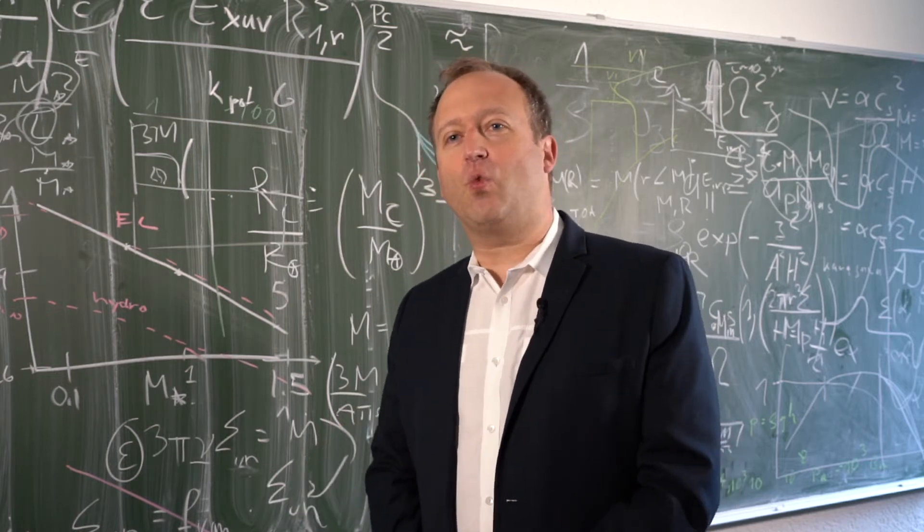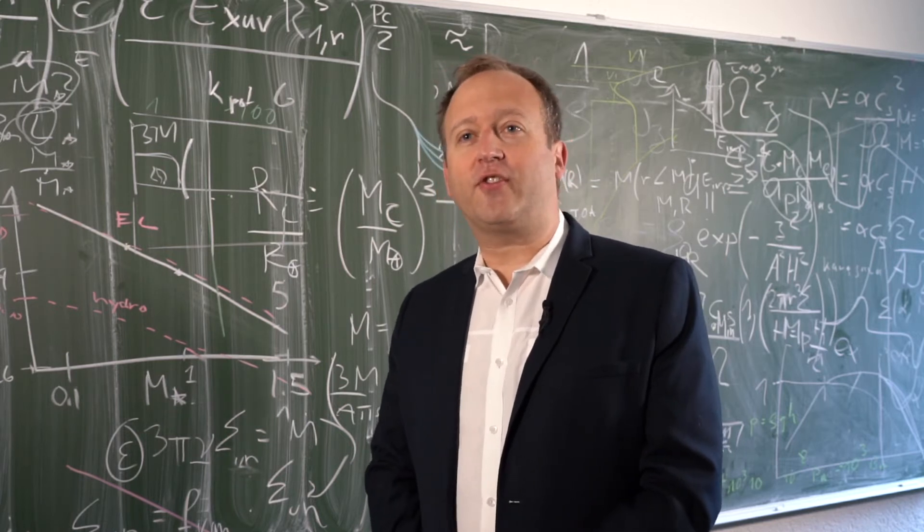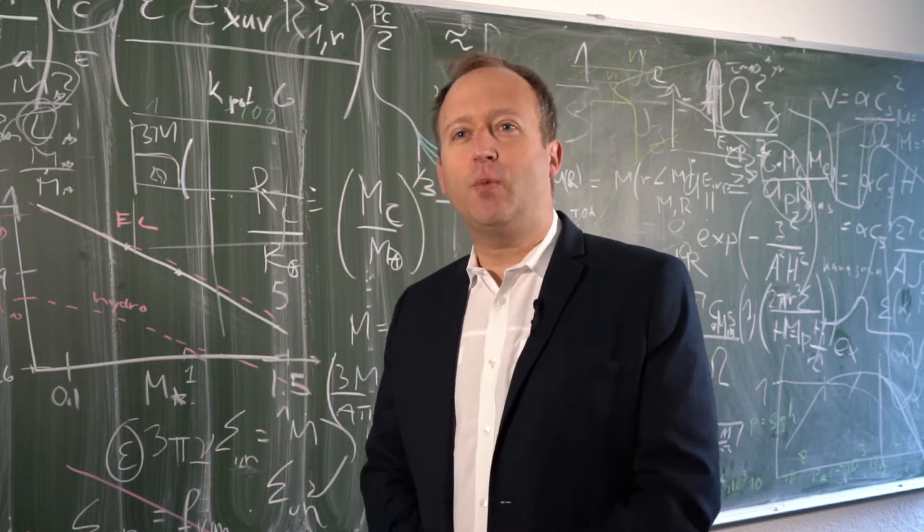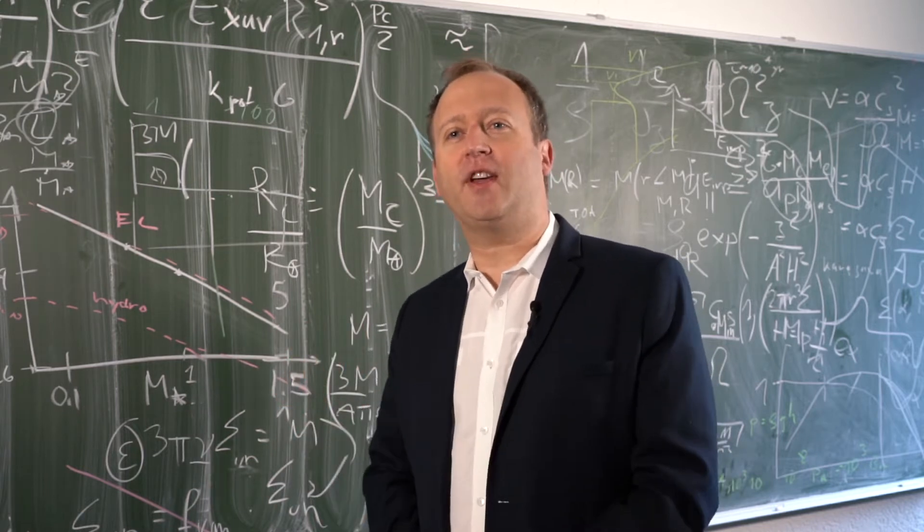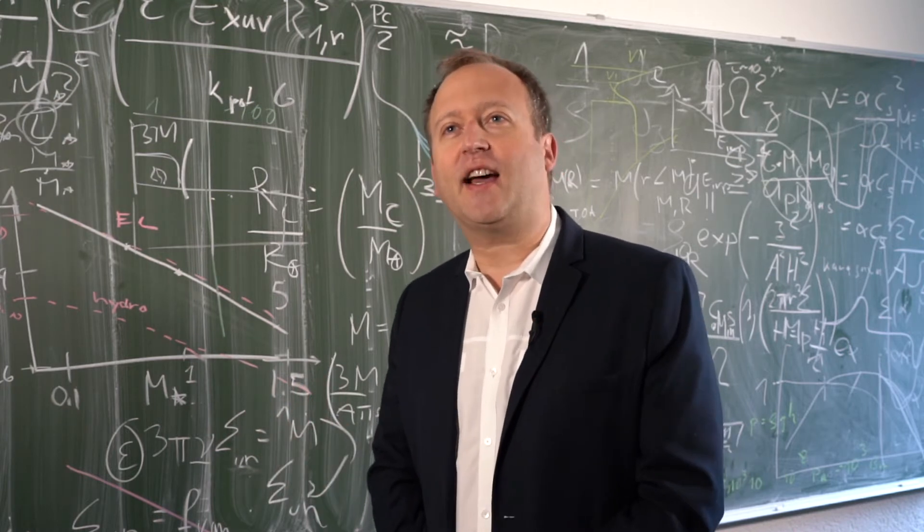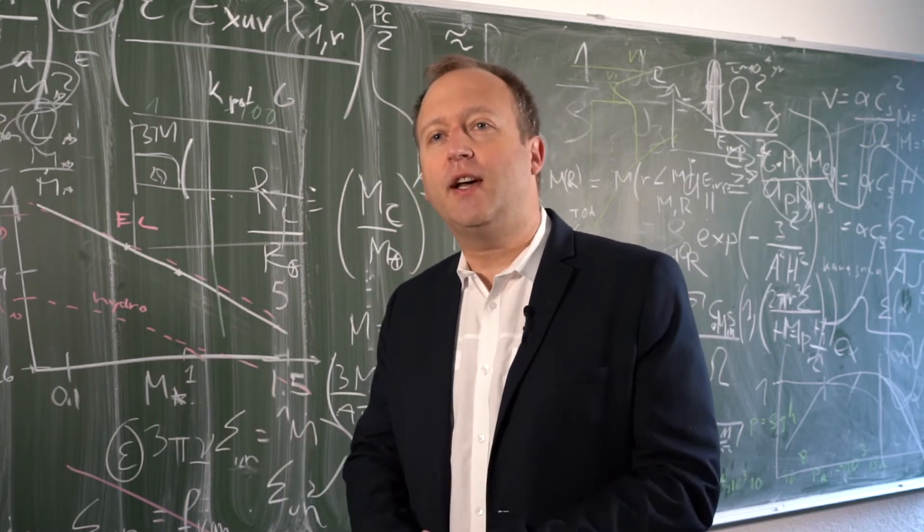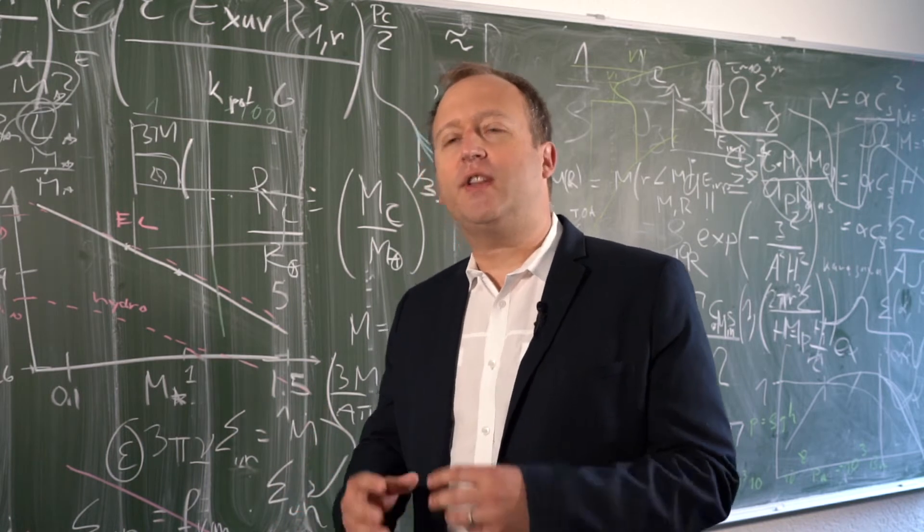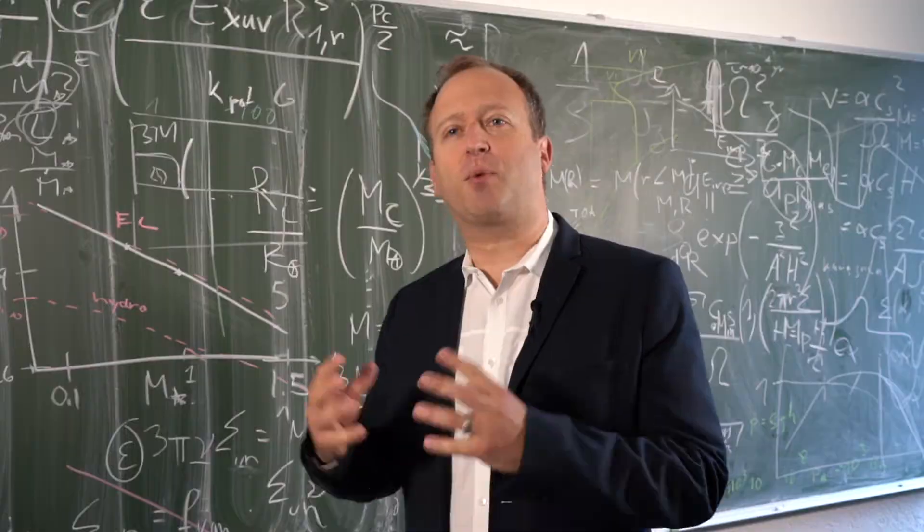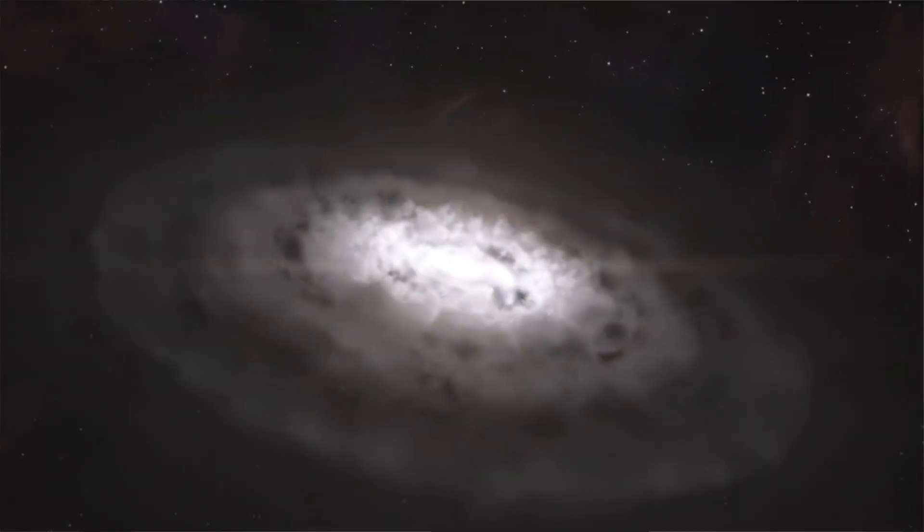While collapsing it also starts to turn because angular momentum, a quantity which describes how strongly something is turning, is conserved. This means that the gas cannot collapse in one point which is the star, but it falls onto a part around this star which is the protoplanetary disk.